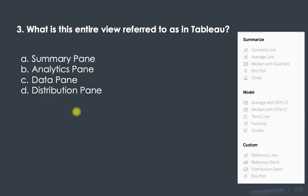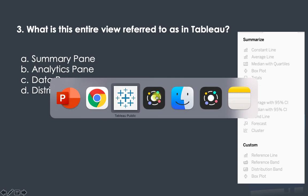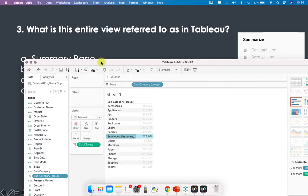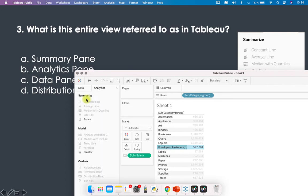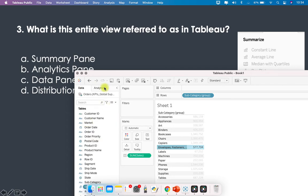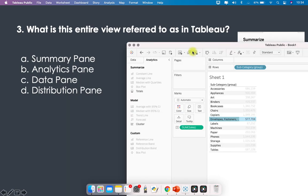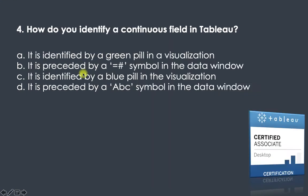Question three: what is this entire view referred to as in Tableau? Let me take you to Tableau. This view is the Analytics pane — you can see Summarize, Model, and Custom sections. This is the normal Data pane where you have all the fields, and here is the Analytics pane where you can add lines, models, reference lines, bands, box plots, and more.